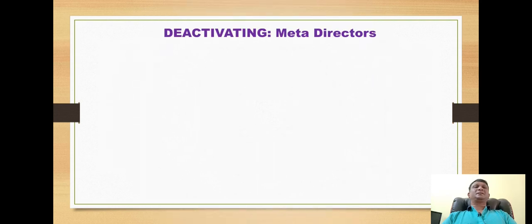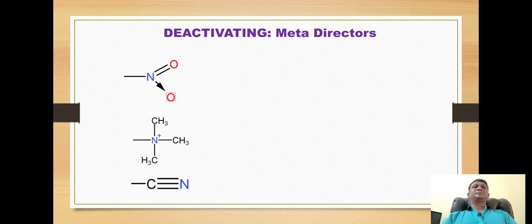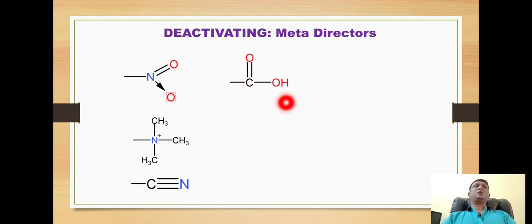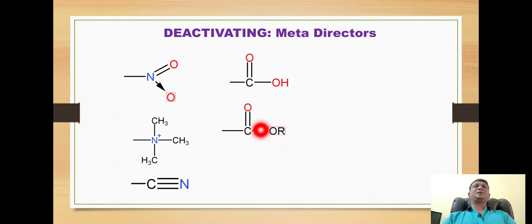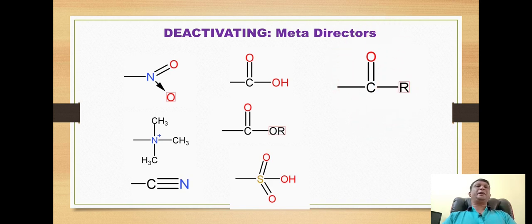The next class is very important: the deactivating groups which are meta directors. Examples include the nitro group, the ammonium ion, the carboxylic acid group (also called hydroxycarbonyl), the ester group (alkoxycarbonyl), the sulfonic acid residue (hydroxysulfonyl), and the alkylcarbonyl group, which represents the ketone and aldehyde groups.